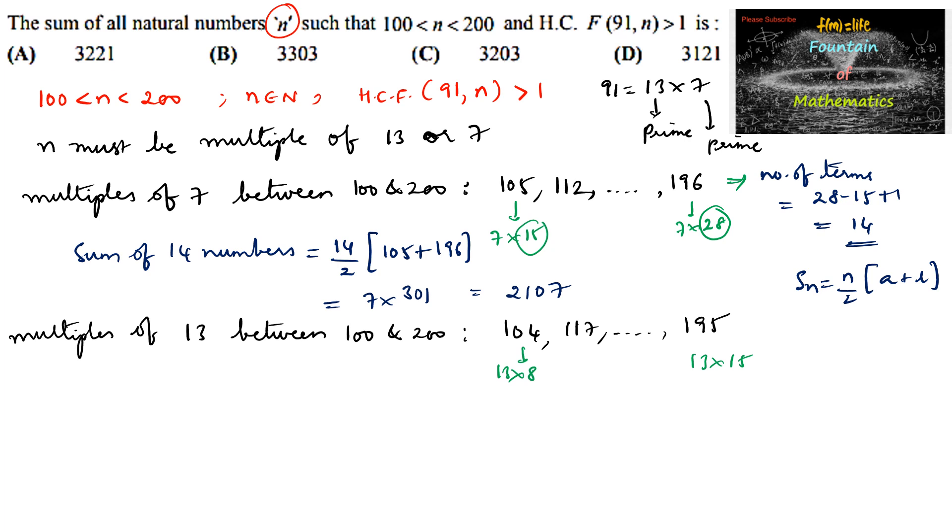Number of terms is equal to 15 minus 8 plus 1, that is 7 plus 1, which is 8. So 8 terms are there. Therefore, sum of 8 numbers.